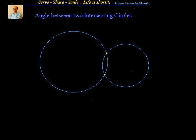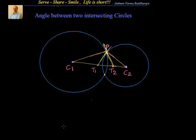Now, how to compute that angle if you know the radius of the circles and you know the distance between the centers of the two circles? Let's try to understand that. For that I will just try to draw this figure. We see that the angle between T1P and T2P is the angle between the two intersecting circles, because you have two tangents drawn to the circle at the point of intersection.